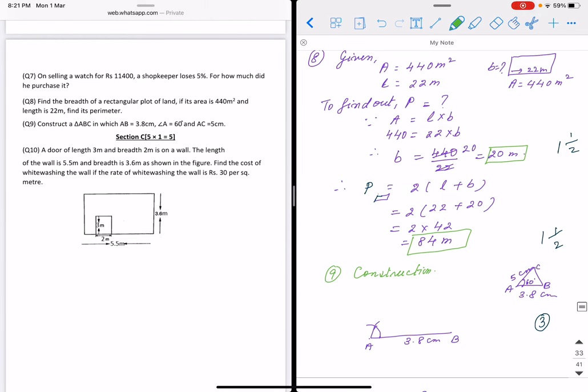Question number 8: Two things we have to find out. If area is given 440 and L is 22 meter, it is a rectangular shape. First we have to find out breadth. We use area is L into B, and B equals 20 meter. This value we put to find out perimeter. We know perimeter is 2 into L plus B. Putting the value, 84 meter will be answer.